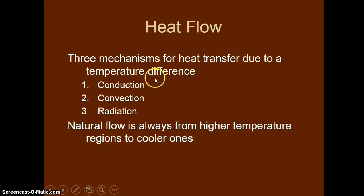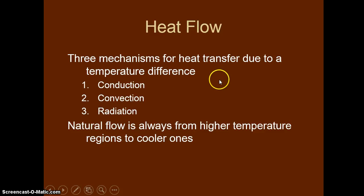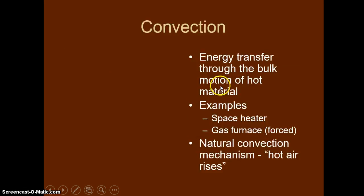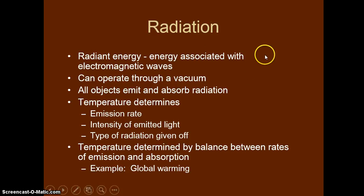I just went back a couple of slides. I want to emphasize that these three mechanisms for heat flow only operate when there's a temperature difference. Once there's no temperature difference, these stop. I was on radiation — this is the only mechanism that can cross a vacuum. For example, the heat we get on Earth from the sun is this form; it's a form of radiation.